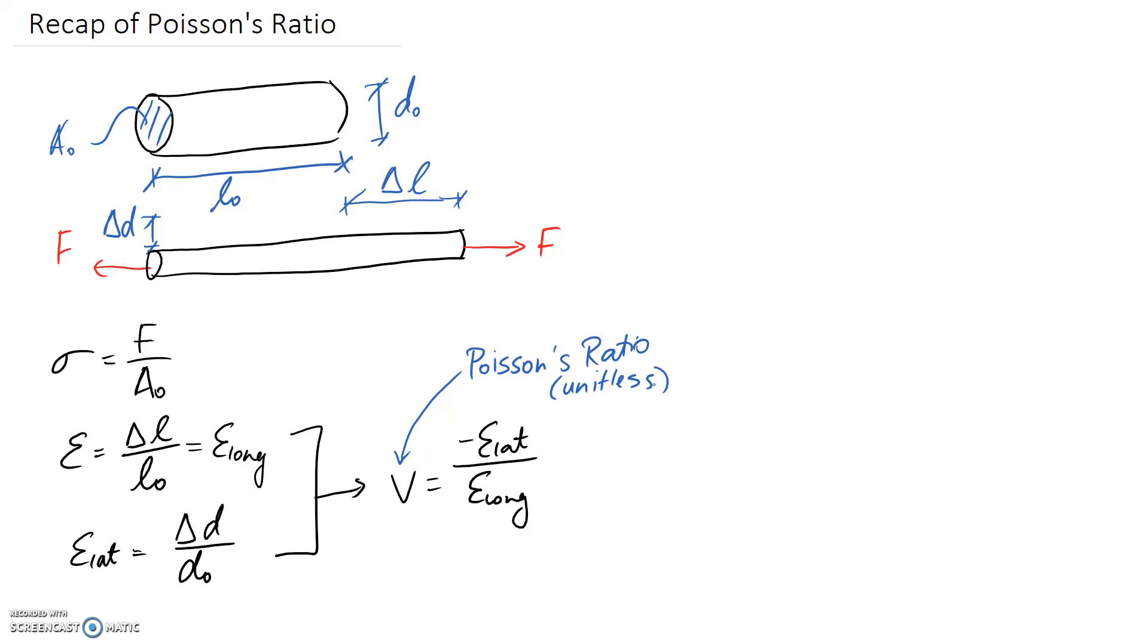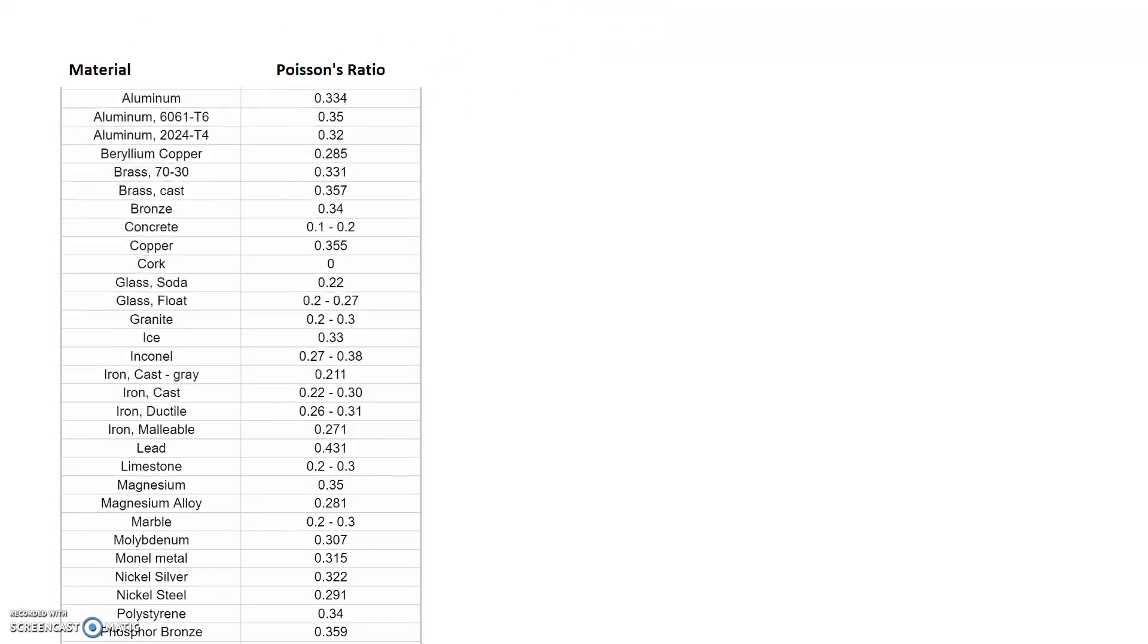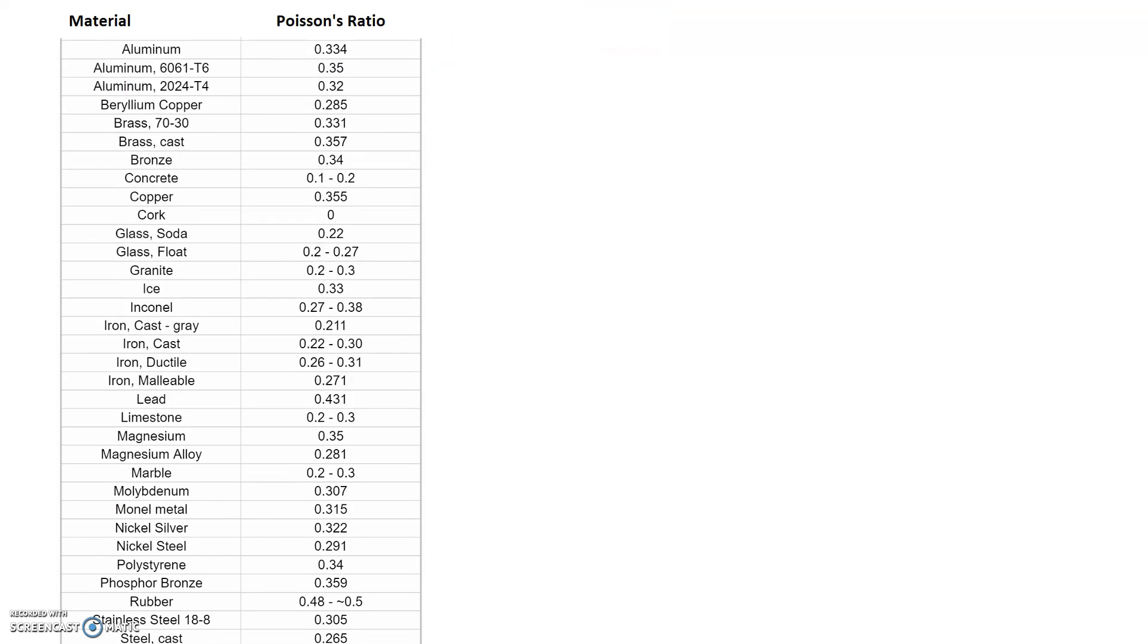So Poisson's ratio is a material property, so each different type of material will have a different Poisson's ratio, and I've provided here just an example of some values for different materials. And what you'll notice is that Poisson's ratio usually tends to be in the range of about 0.2 to 0.5 for its value. So that's for normal materials.